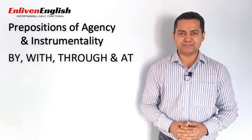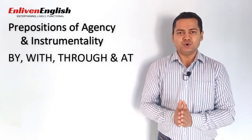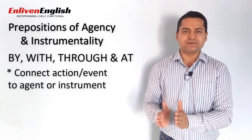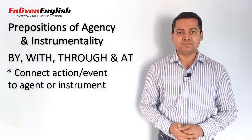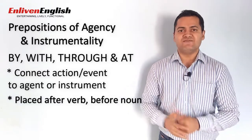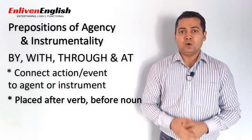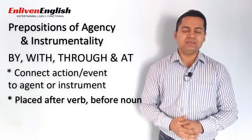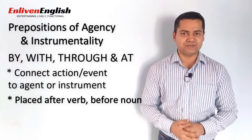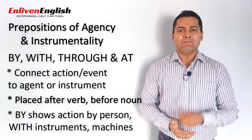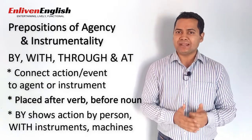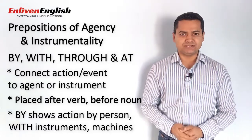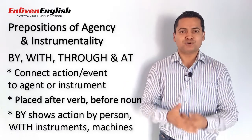Prepositions of agency or instrumentality — by, with, through and at — connect an action or event to an agent or instrument responsible for its happening. These prepositions are placed after a verb and before a noun to show who or what makes something happen. By and with are the most commonly used. By is used to show an action by a person, and with for machines, devices and instruments.